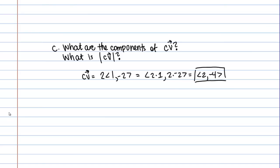Then it asks what is the magnitude of this new vector. Once again, we can do that the same way. That's just going to be the square root of 2 squared plus negative 4 squared. That's the square root of 4 plus 16 or the square root of 20.